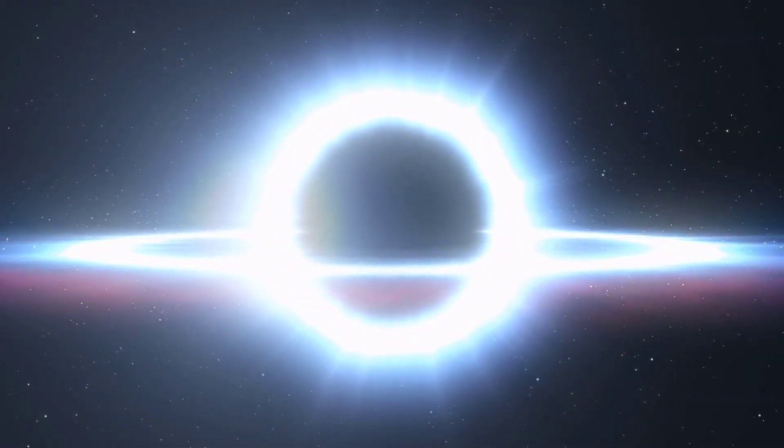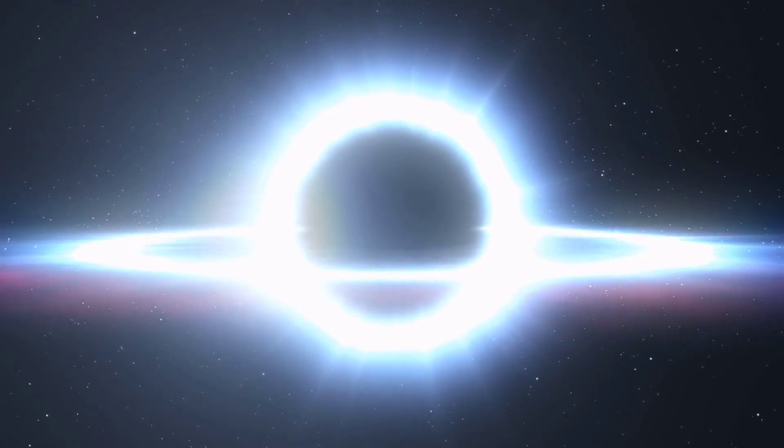The core remaining after the supernova explosion is so dense that nothing can stop it from collapsing under its own gravity. If the core is massive enough, it will keep compressing until it becomes an infinitely small and dense point, the singularity. And so, enveloped by the event horizon, a black hole is born.